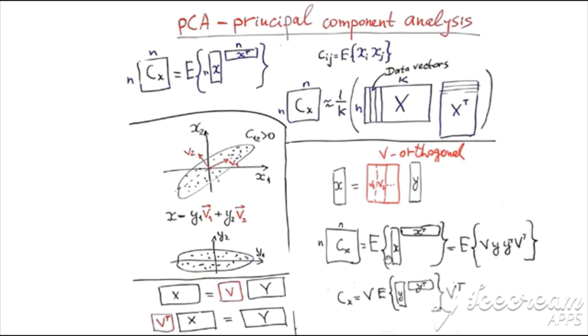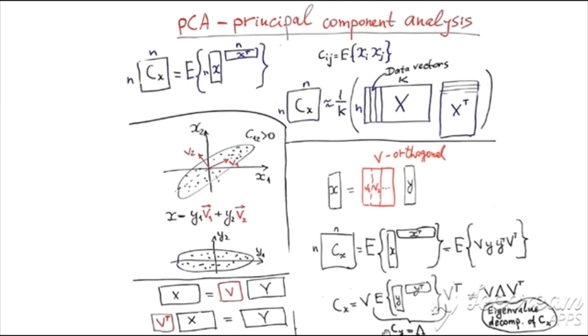And now, let us put the expression for X equals VY into the formula of covariance. We get CX is the expectation of VY by Y transpose V transpose. V and V transpose are constants, so we can take them out of expectation and get V multiplied by expectation Y Y transpose by V transpose. Pay attention, here we have the covariance matrix of Y, which is diagonal.